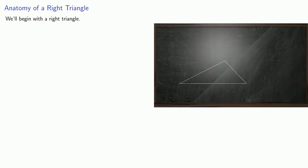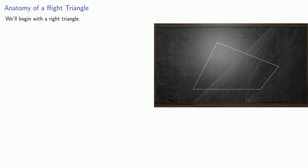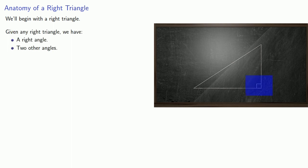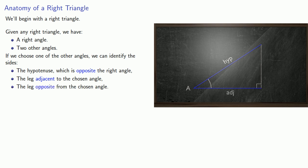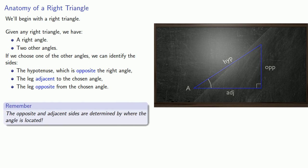Ultimately trigonometry will apply to any triangle, but we'll begin with a right triangle. A right triangle has a right angle and two other angles, where the square marks where the right angle is. Now if we choose one of these other angles we can identify the remaining sides: the hypotenuse, which is opposite the right angle; the leg adjacent to the chosen angle; and the leg opposite the chosen angle. It's very important to remember that the opposite and adjacent sides are determined by where the angle is located.